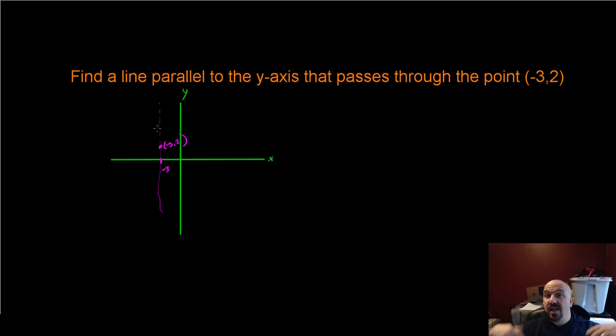This takes on an x equals format. The value of all the x coordinates in this particular line are going to be the same. This is going to be x equals something. That something happens to be the x value of the point that it moves through. So this is just going to be x = -3.